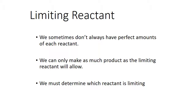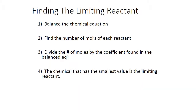That's percentage yield calculations. Now let's look at limiting reactants or reagents. Sometimes we don't always have perfect amounts of the reactants. We can only make as much product as the limiting reactant will allow. The four-step method: balance the chemical equation, find the number of moles of each reactant, divide the moles by the coefficient from the balanced equation, and the chemical with the smallest value is the limiting reactant.